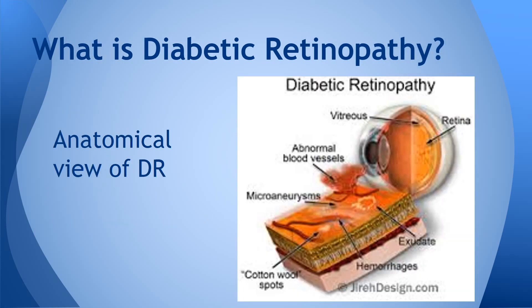There's an anatomical view of diabetic retinopathy, and in it you can see a cut portion of the eye. If you look at the abnormal blood vessels, those are the new blood vessels created from the blockage of the tiny blood vessels. The new ones have grown, burst, and you can see the blood leaking out into the eye.